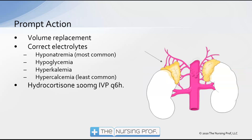Prompt action includes volume replacement, since the patient will have loss of volume from poor regulation. Hyponatremia is our most common electrolyte disorder to watch for, followed by hypoglycemia, hyperkalemia, and the possibility of hypercalcemia — listed in order from most to least common. Since the problem is a lack of steroid, the treatment is steroid: hydrocortisone 100 mg IV push every 6 hours as replacement.